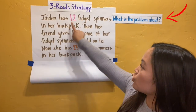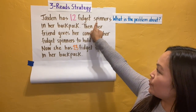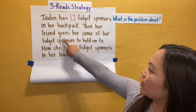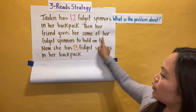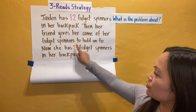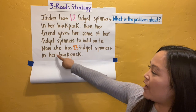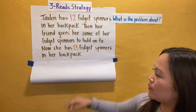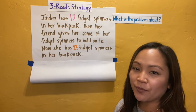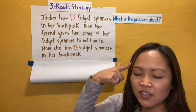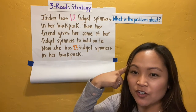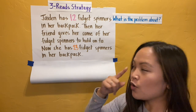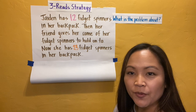Jaden has 12 fidget spinners in her backpack. Then her friend gives her some of her fidget spinners to hold on to. Now she has 23 fidget spinners in her backpack. I want you to think in your head, or you can say it out loud to yourself — what is the problem about?